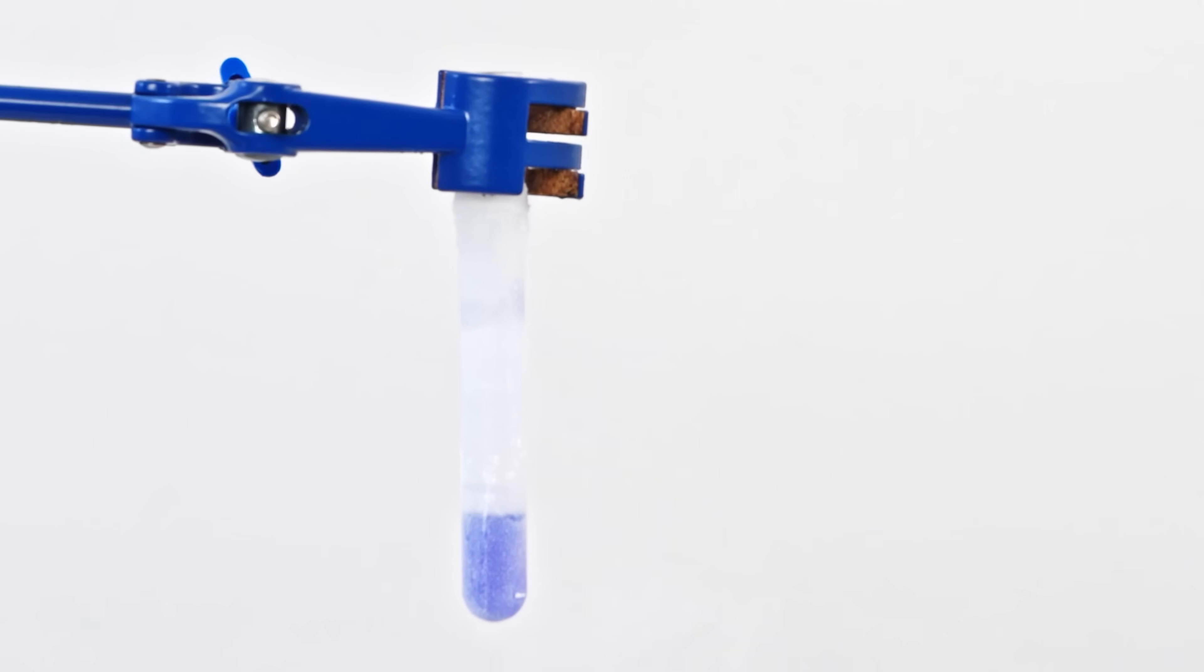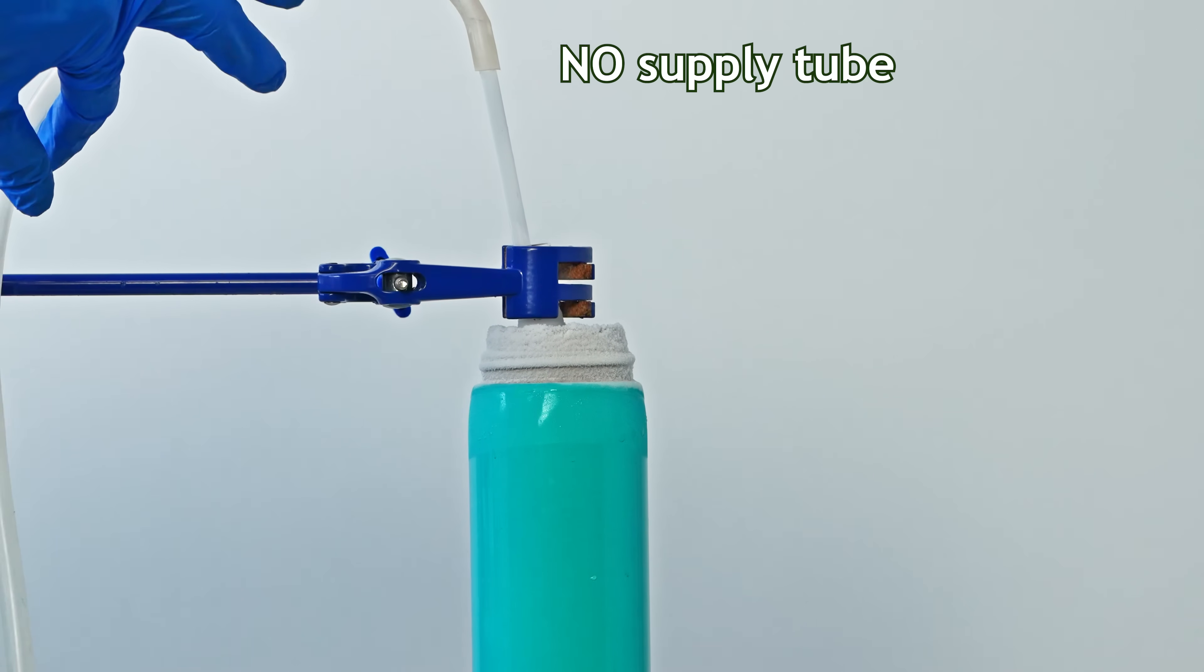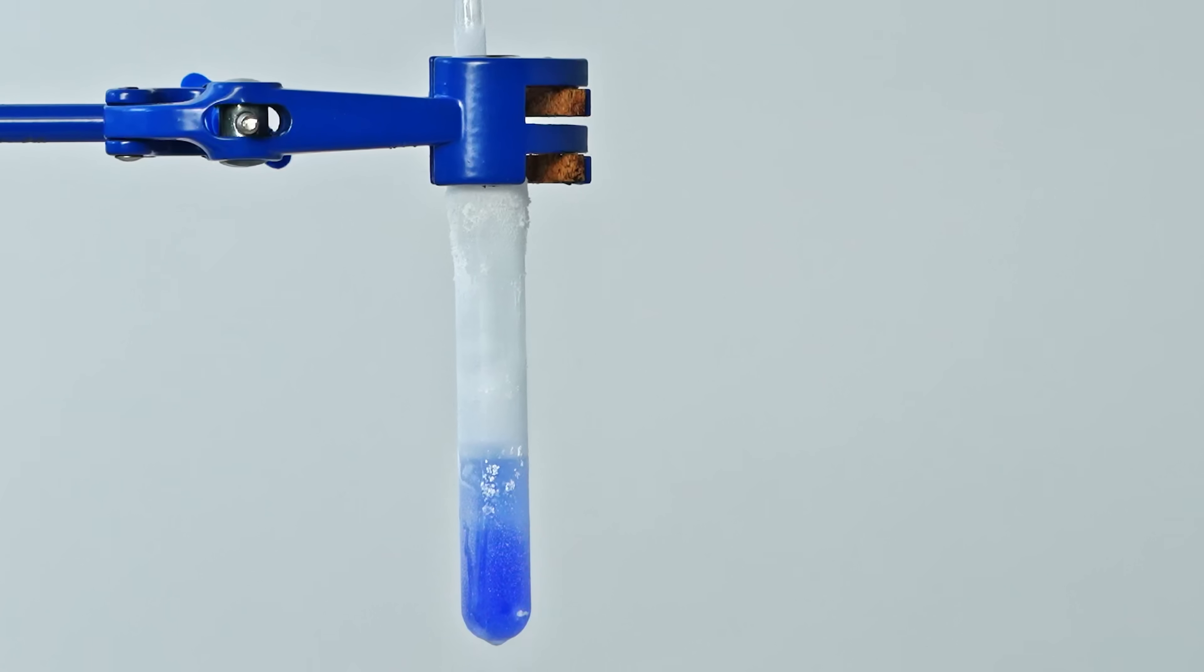I condensed a small amount of ozonated oxygen and lowered a tube into it to introduce nitric oxide. When I opened the cylinder valve, a small amount of nitrogen monoxide entered the condensed ozonated oxygen.